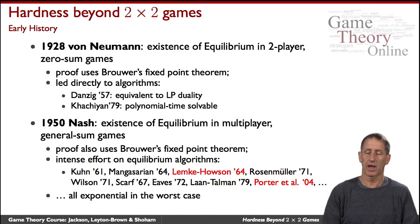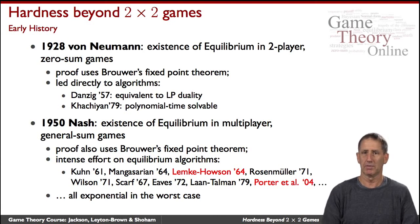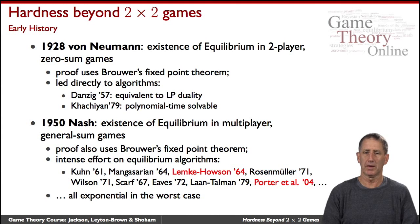When you go beyond zero-sum games, when John Nash proved the existence of equilibrium for general-sum games, he used the same Fixed Point Theorem of Brouwer, and that also informed a series of algorithms noted on the slide. We will be looking at two of them: the Lemke-Howson algorithm and a much more recent algorithm due to Ryan Porter and others.